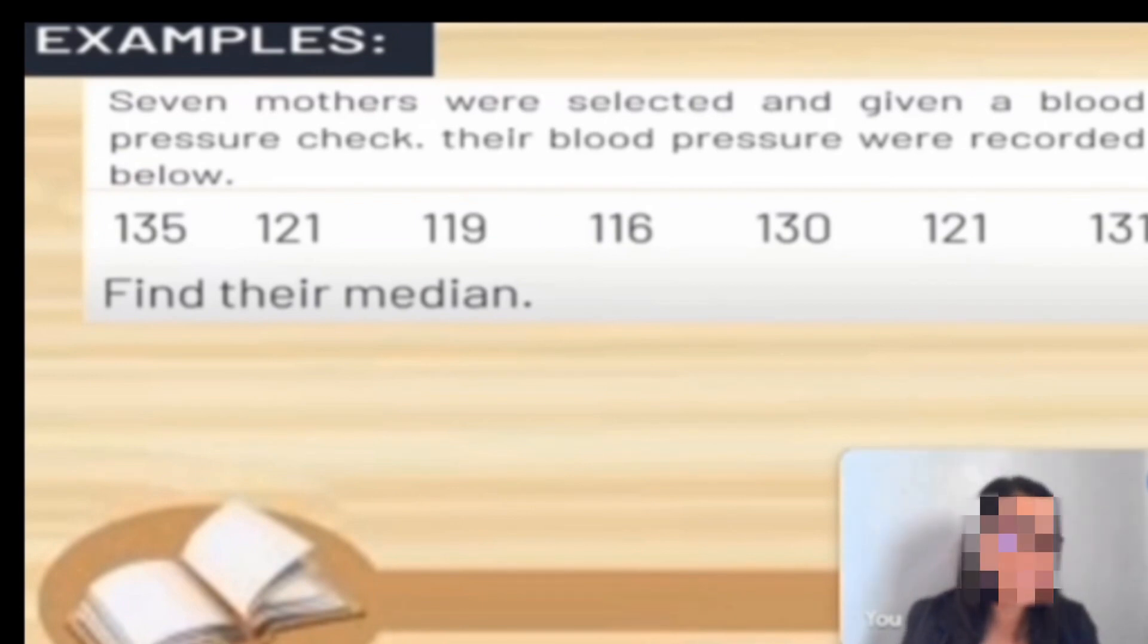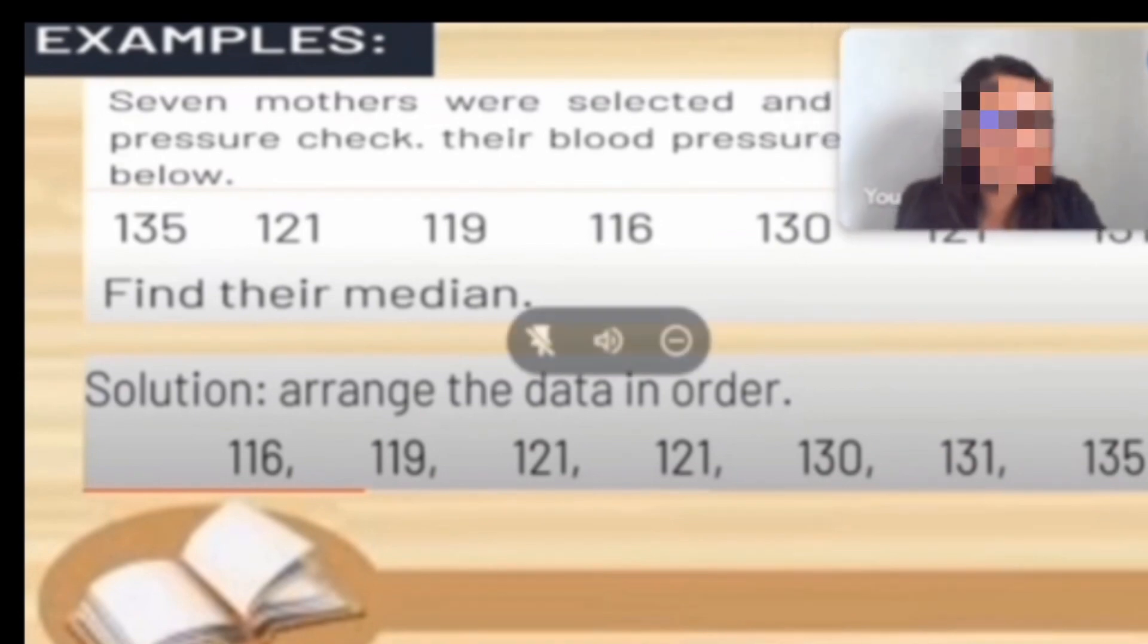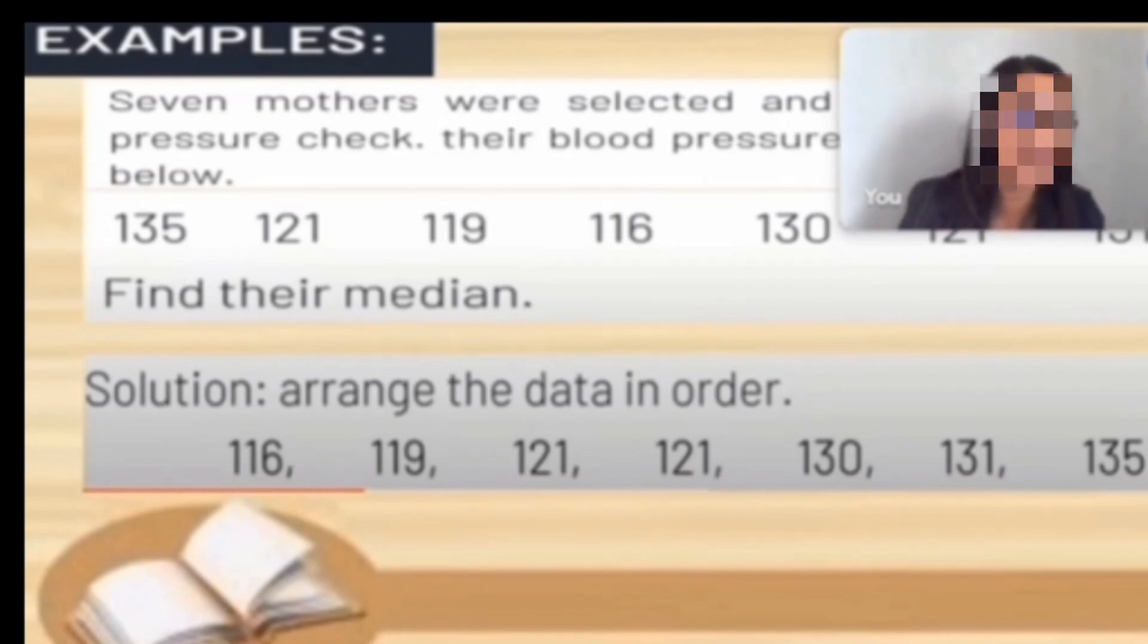This is our example: seven mothers were selected and given a blood pressure check. Their blood pressures were recorded below. We have 135, 121, 119, 116, 130, 121, and 131. Find their median. First, we need to arrange the numbers from least to greatest or smallest to highest. The smallest number is 116 and the highest number is 135.